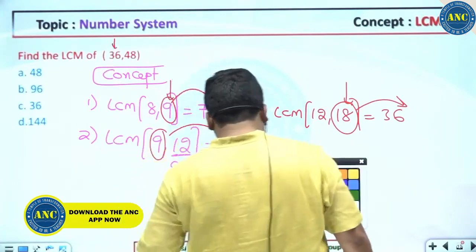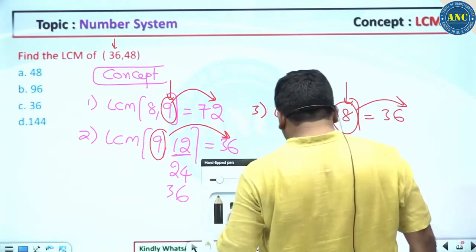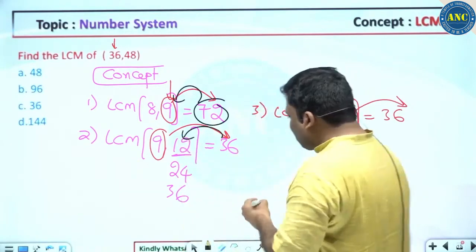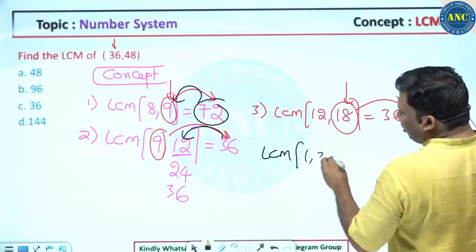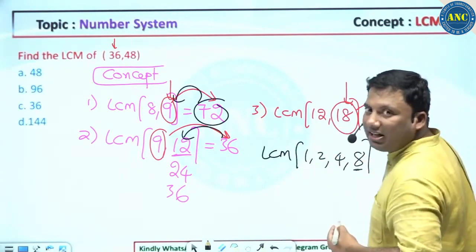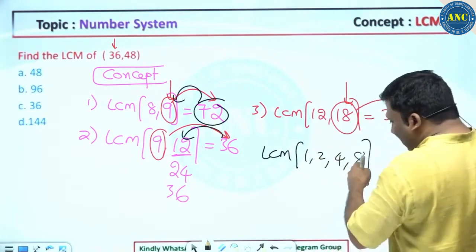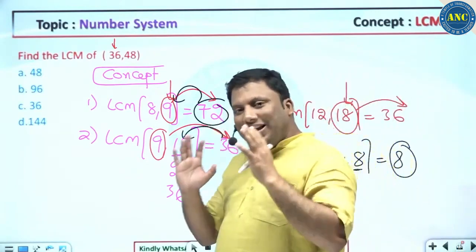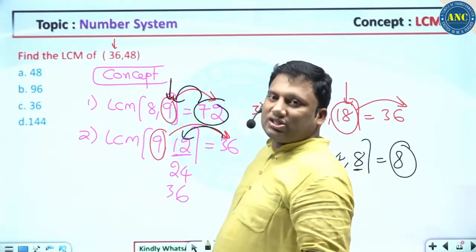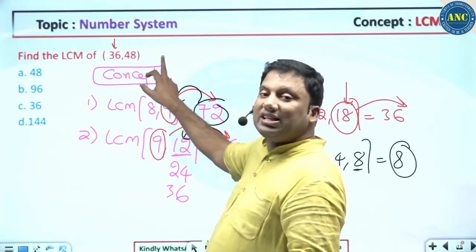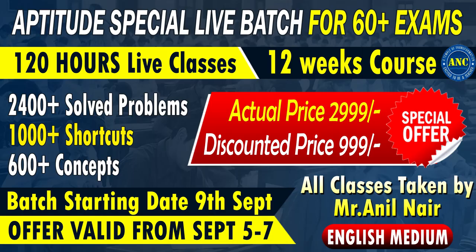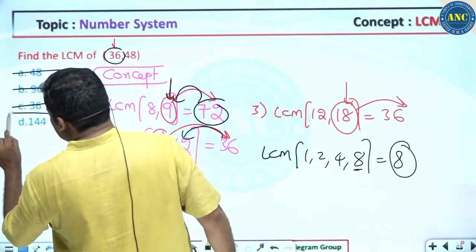Another concept: LCM is always greater than or equal to the largest number. For example, LCM of 1, 2, 4, 8 — the largest number is 8, which is divisible by every other number, so the answer is 8. Now for LCM of 36 and 48: 36's digital sum is 9, so the answer's digital sum should be 9. But LCM must be greater than or equal to 48, so it cannot be 36. The answer is 144.